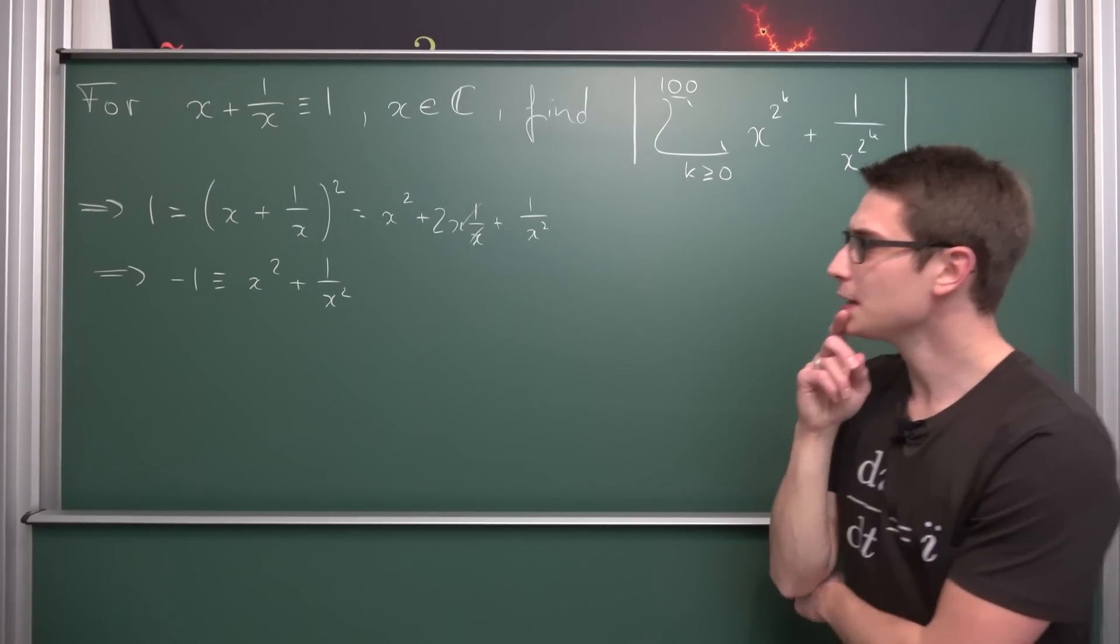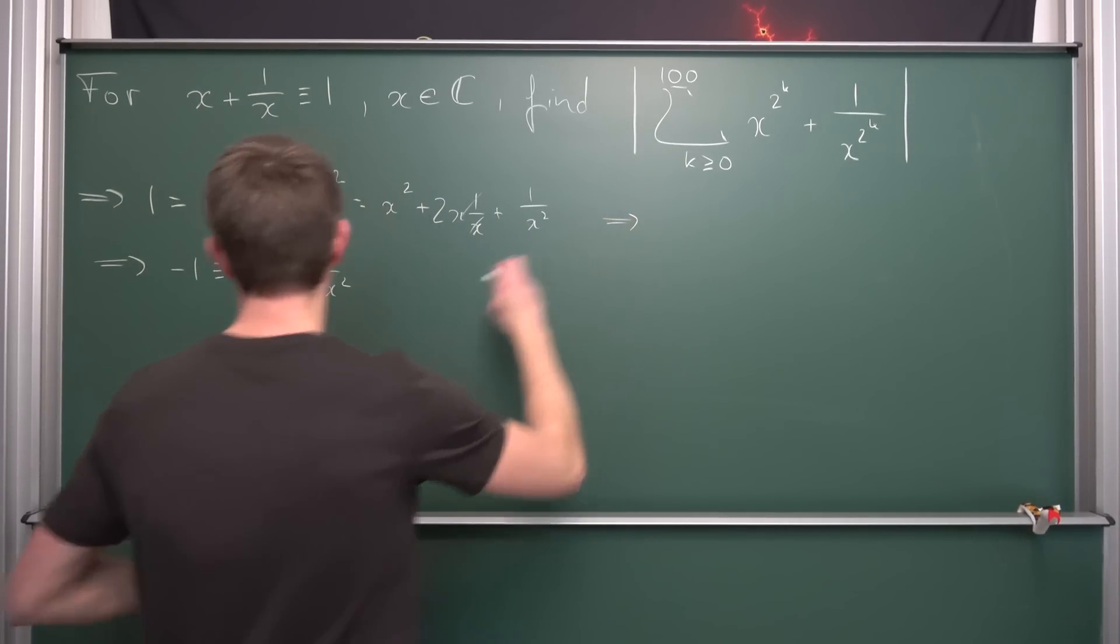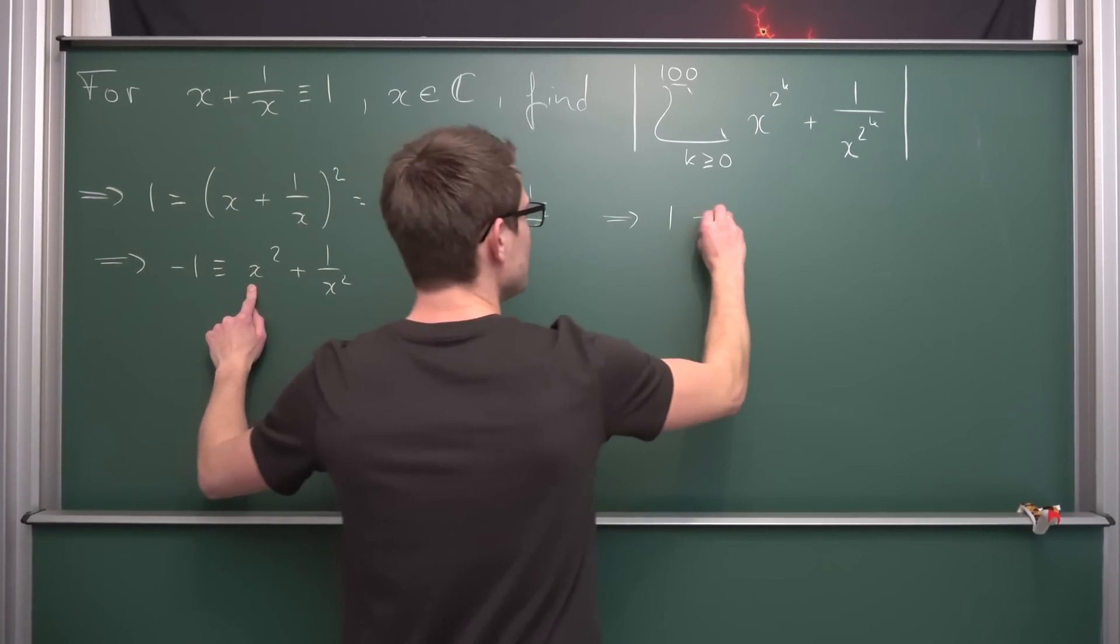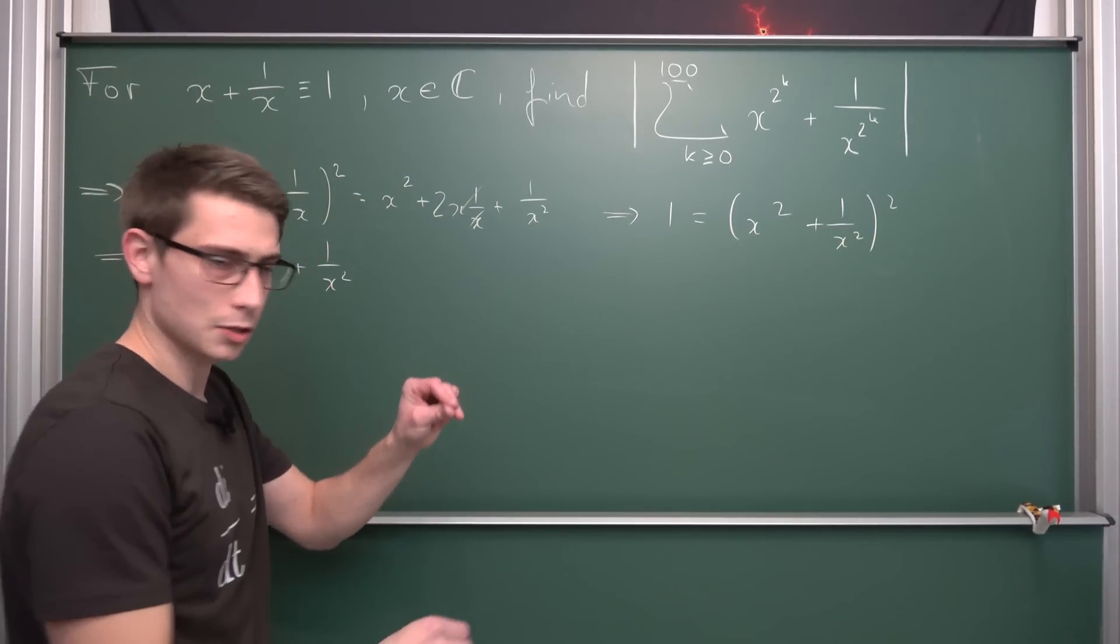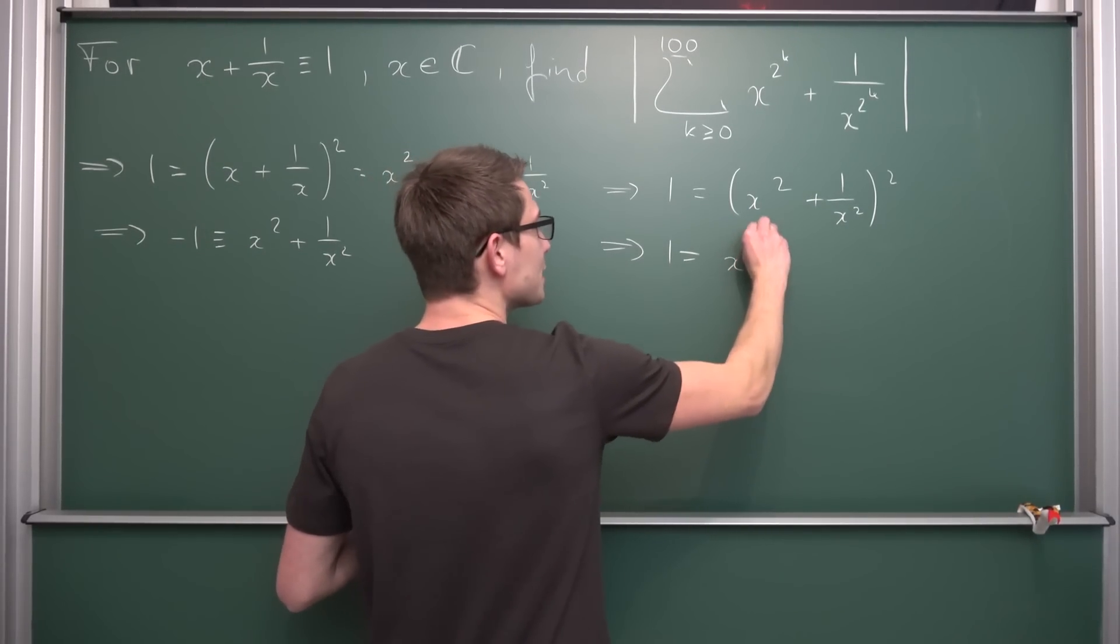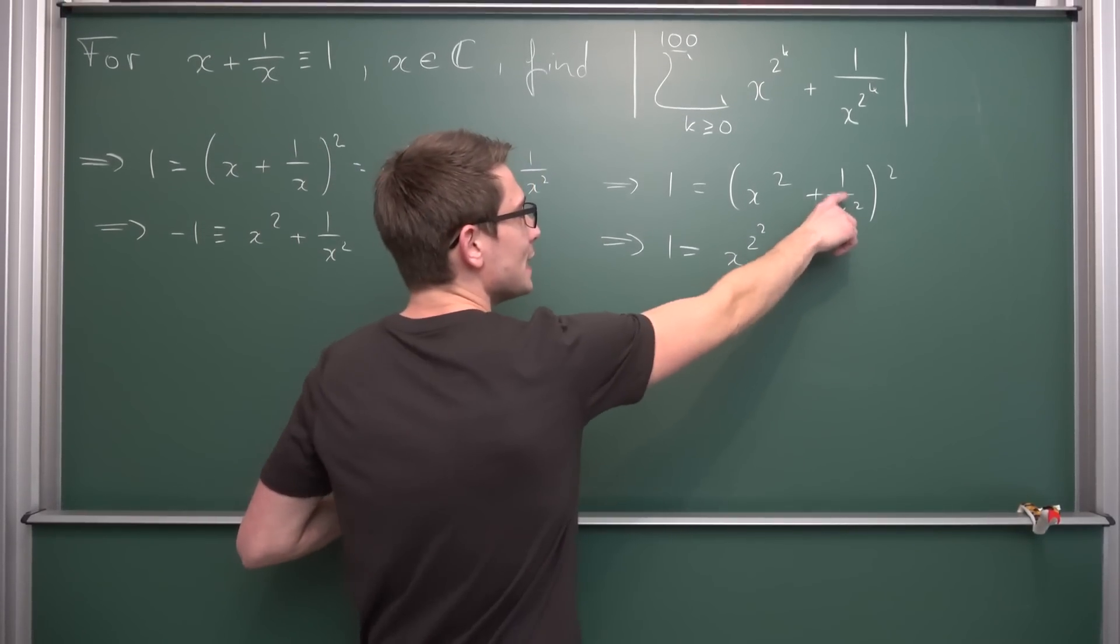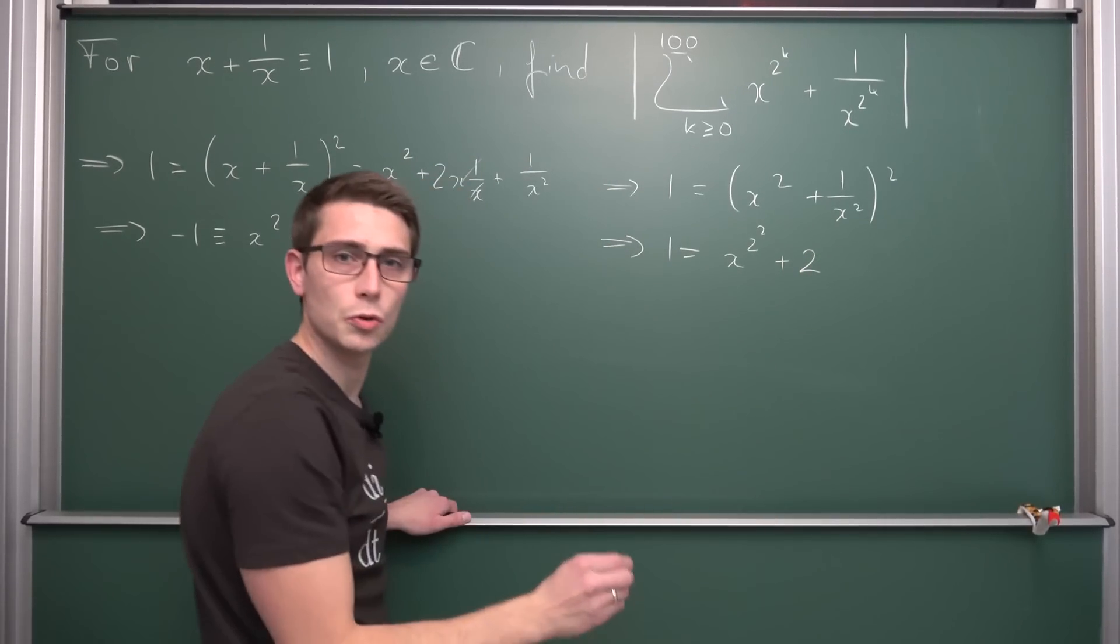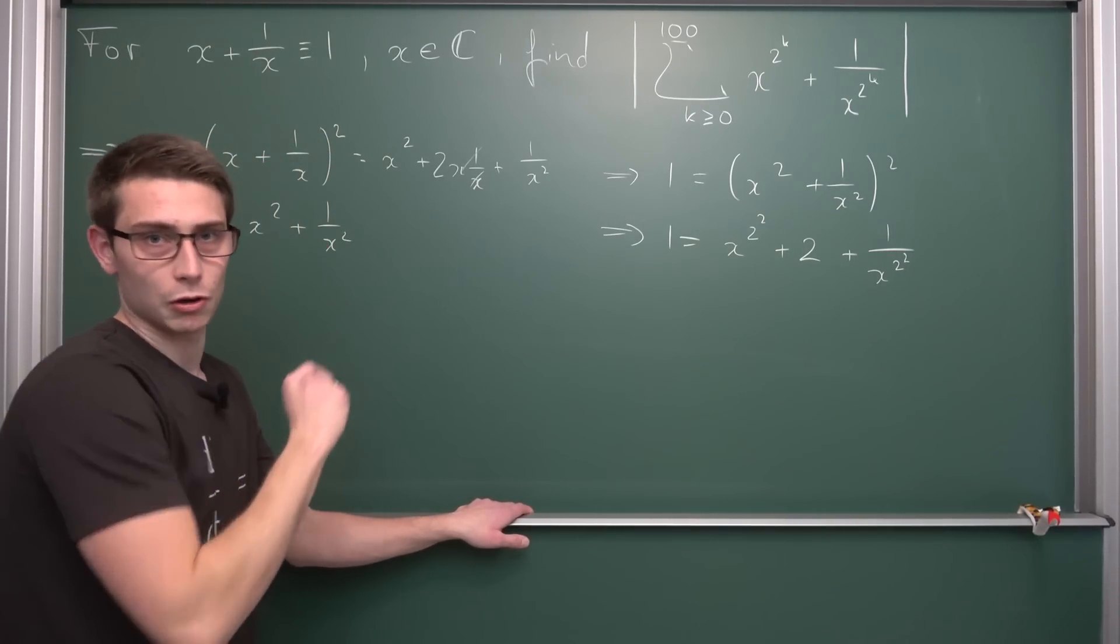Now, what would happen if we were to square both sides of this equality yet again? Let us try this out. If we square this we receive 1 yet again, because negative 1 squared is 1. Now squaring this whole thing results in x squared plus 1 over x squared, the whole thing squared. This equals 1, which equals x squared squared, x to the 4th power, plus this times this resulting in 1 with a factor of 2, plus 1 over x squared squared.